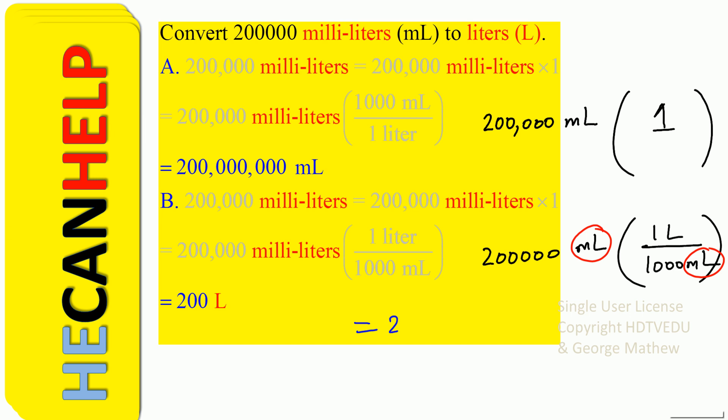So what do we get? 200,000 divided by thousand. So many liters and that is 200 liters.